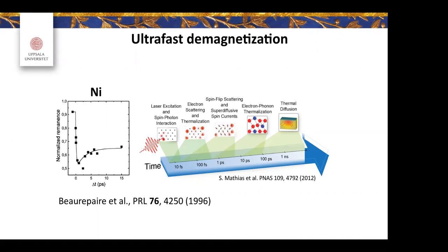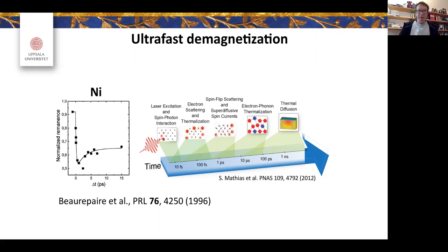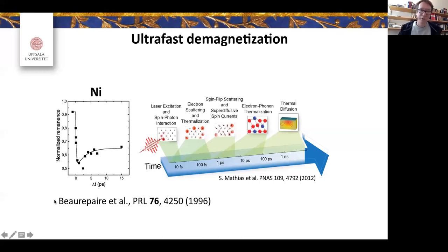During this time, you start to demagnetize. Generally, it is believed that it happens through two different processes: either through spin-flip scattering, or through superdiffusive spin currents — where majority spins are not flipping but are actually leaving the probed area. At a little bit longer timescales, you will also have thermalization between the electron and the phonon systems, and at even longer timescales, the heat goes away through thermal diffusion.